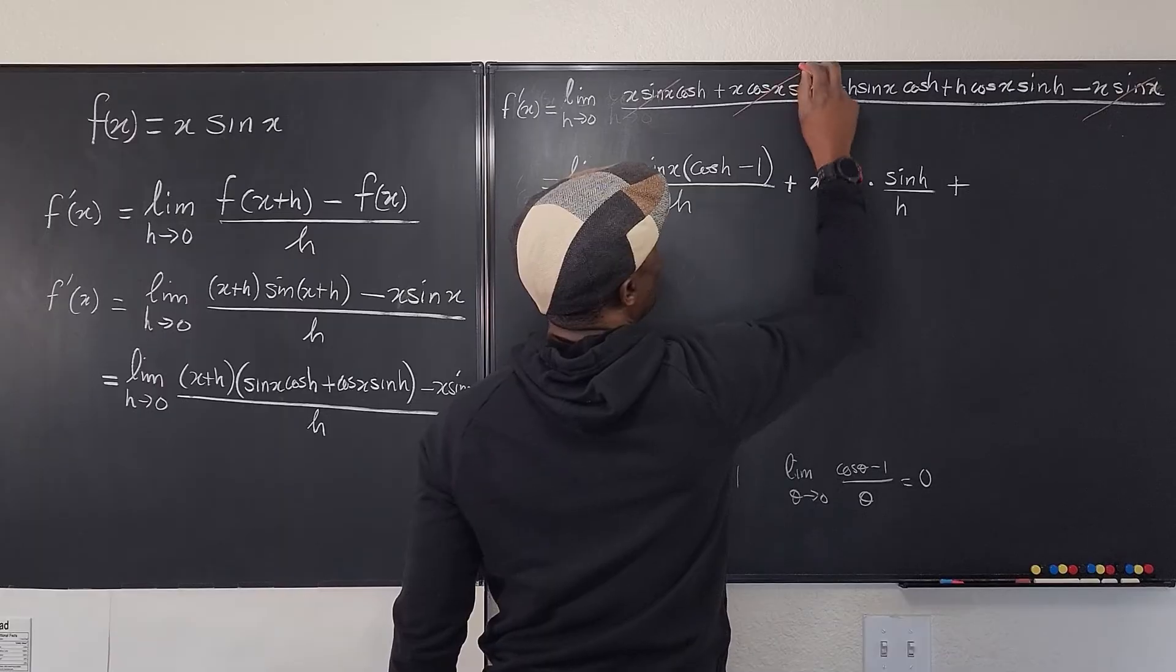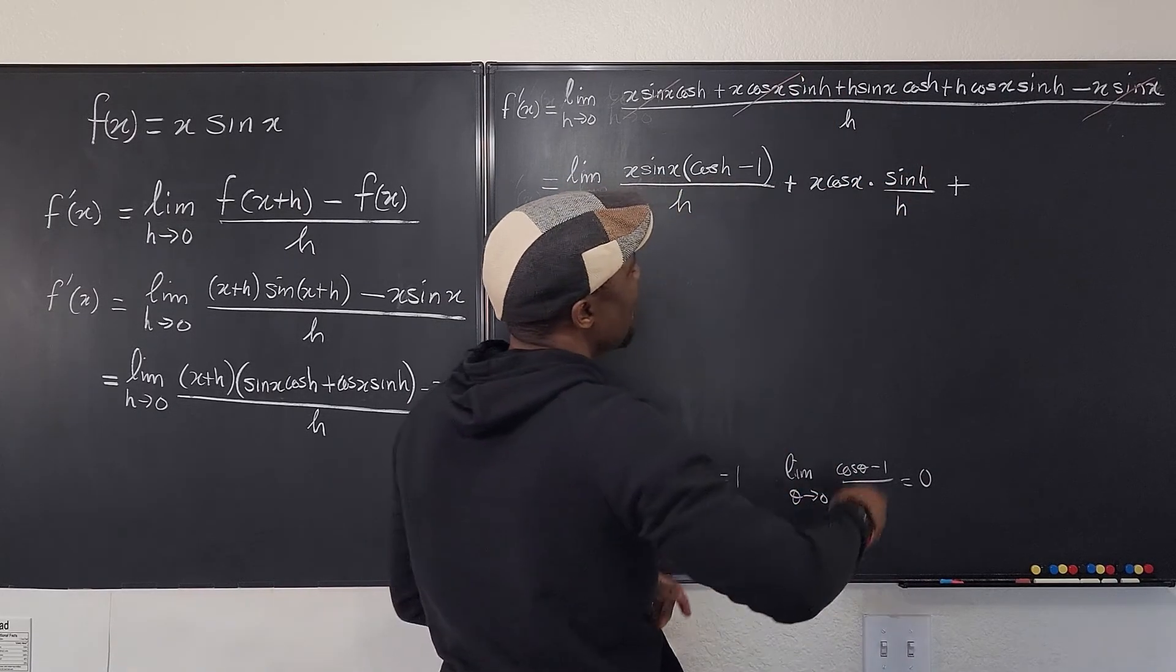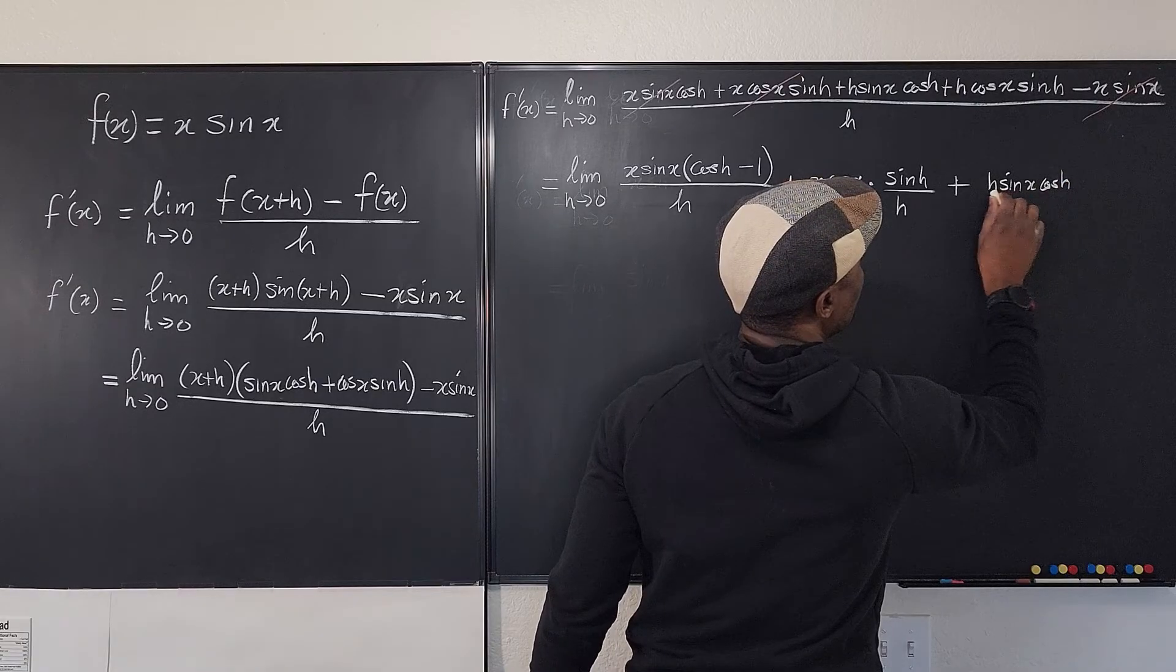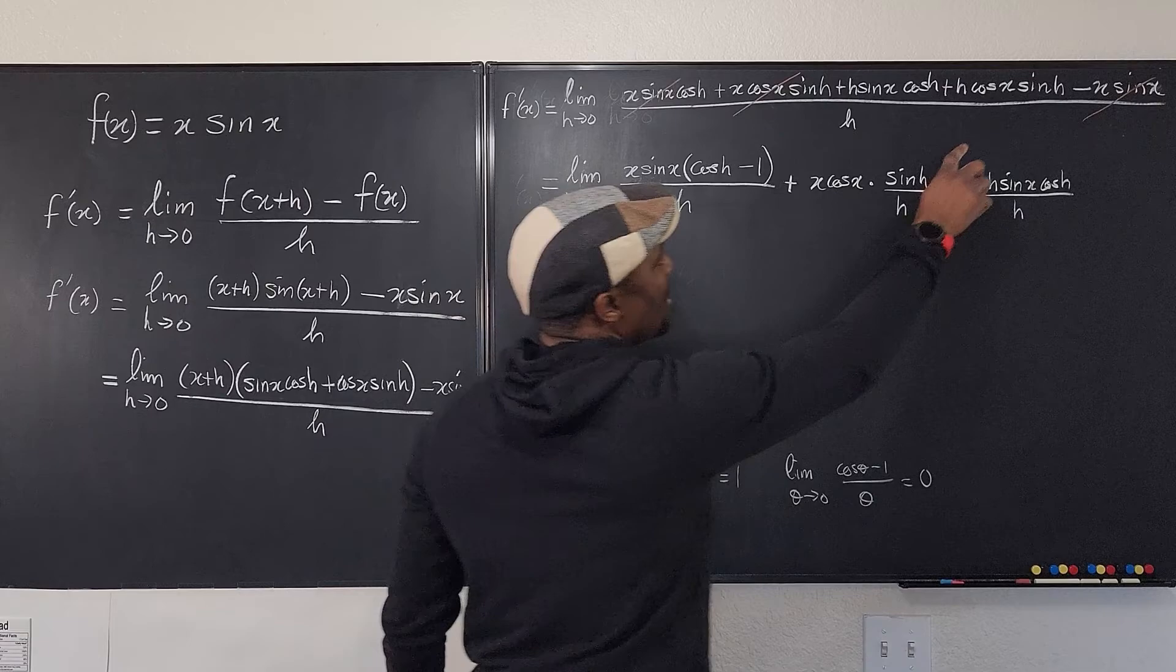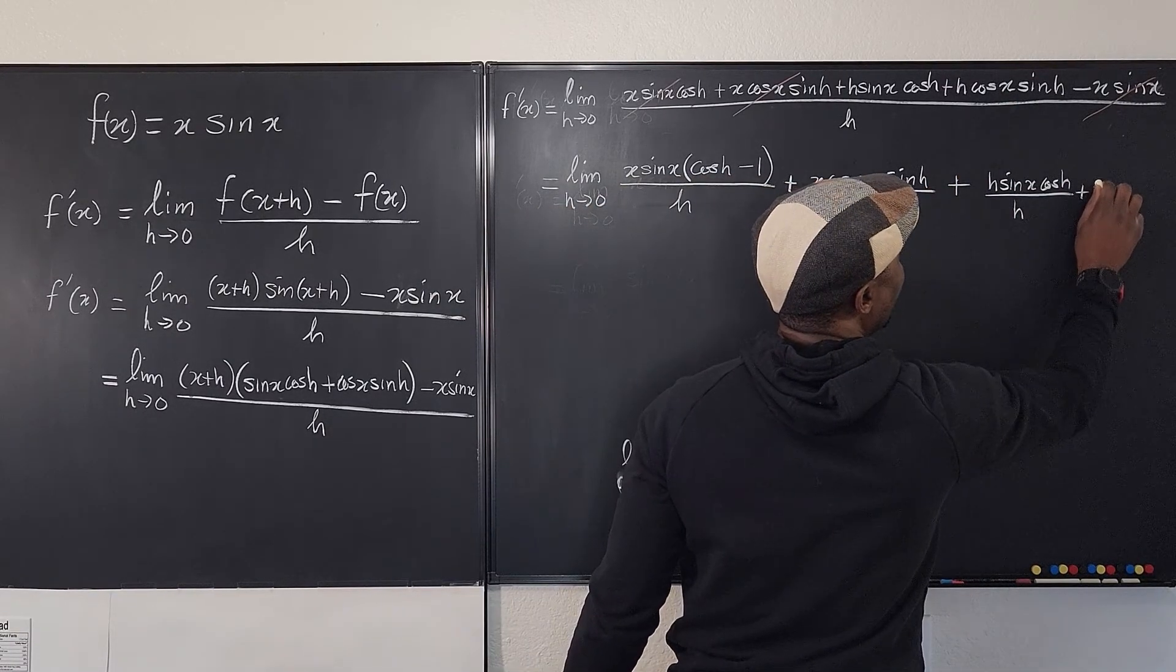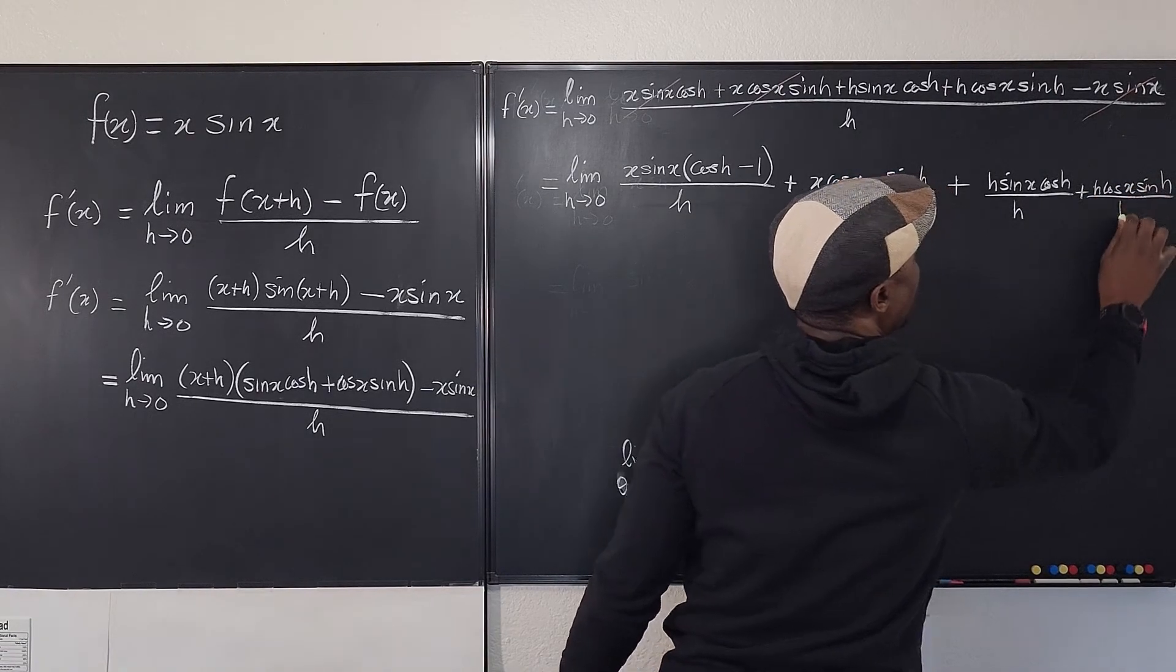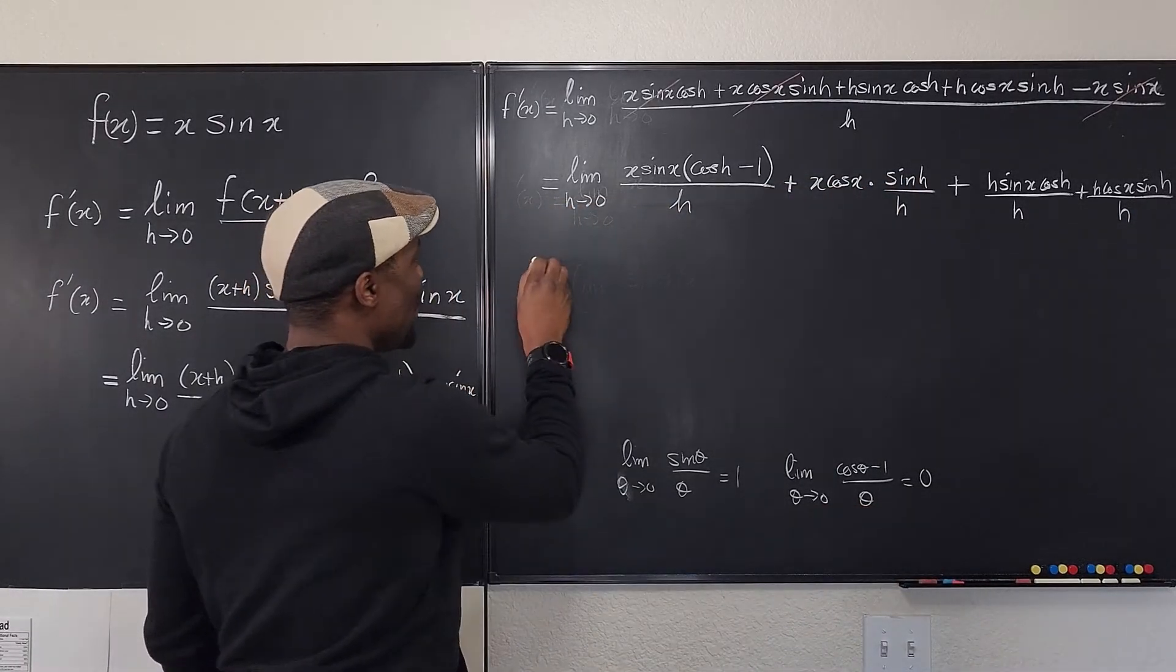So now I need to take care of this one. But if I write this out, it's going to look like this. H sine x cosine h over h. And then I'm going to have the same thing here. Plus h cosine x sine h divided by h.